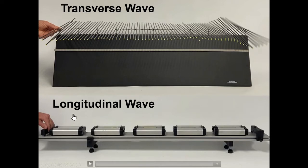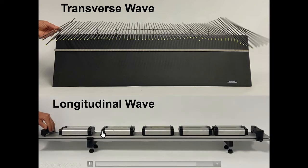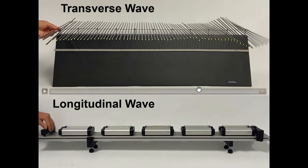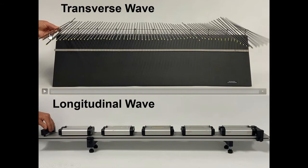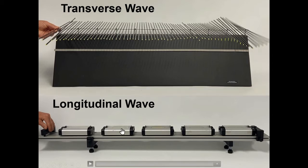A longitudinal wave — here I have these little carts with opposing magnets. Give a little shove here, and the wave transfers down. Waves transfer energy. Matter is not actually moving from here to here; the matter was just moving up and down, but the energy was traveling down. Same thing here — the matter just moved back and forth, but the energy traveled down the length. When energy is moving from one place to another, we say that energy is propagating.